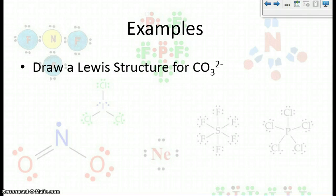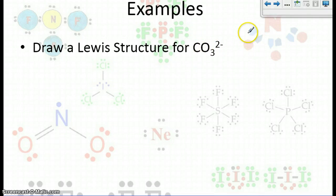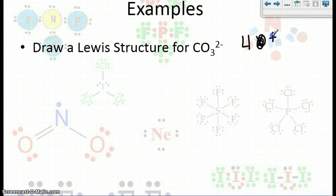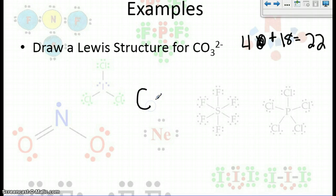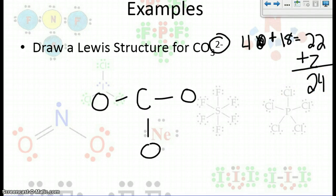Last one: CO₃²⁻ — this is the carbonate ion. The difference here is that the two minus means we have to add two extra electrons. Carbon has four valence electrons. Oxygen has six, and there are three oxygens — six times three is 18. Four plus 18 is 22, so we have 22 total electrons. But we forgot to add in those two extra electrons from the charge, so we get 24 total electrons to work with.